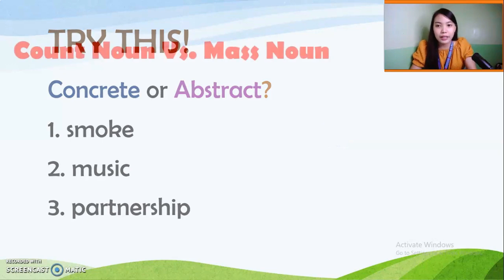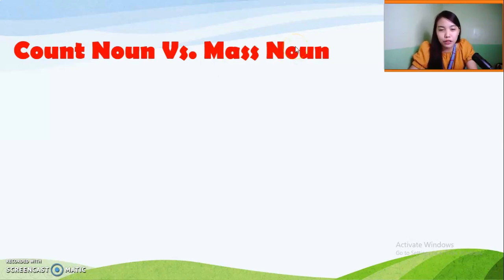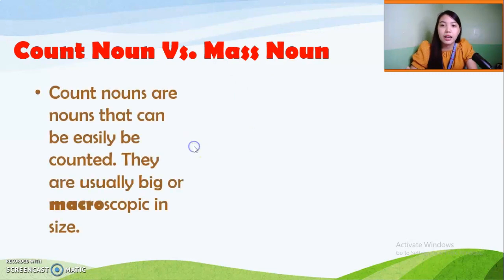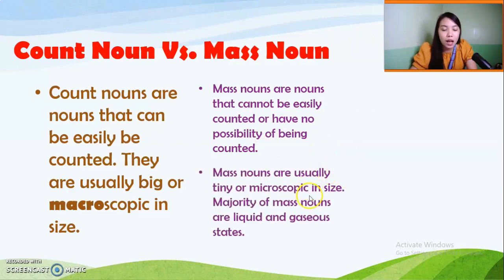Now we have the count noun versus the mass noun. As you can observe from the names themselves, count nouns are nouns you can count. Mass nouns have no possibility of being counted. Count nouns can easily be counted and are usually big or macroscopic in size. Mass nouns cannot easily be counted and are usually tiny or microscopic in size. The majority of mass nouns are in a liquid or gaseous state.